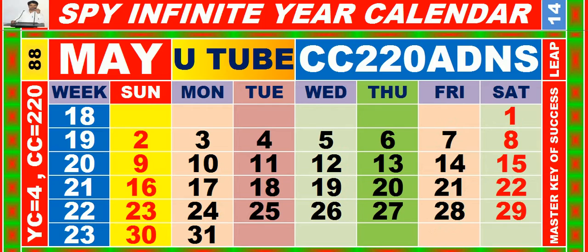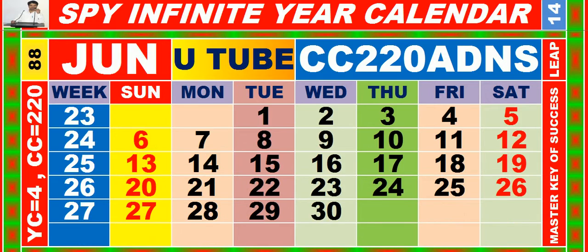Calendar for the month of May, having calendar code equal to 220. Calendar for the month of July, having calendar code equal to 220.